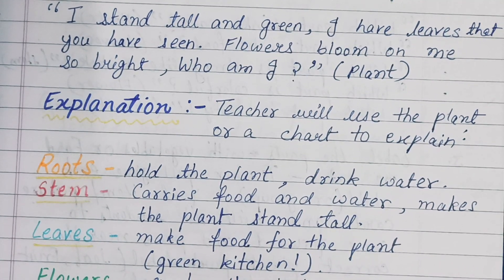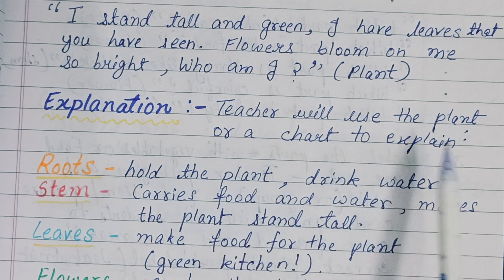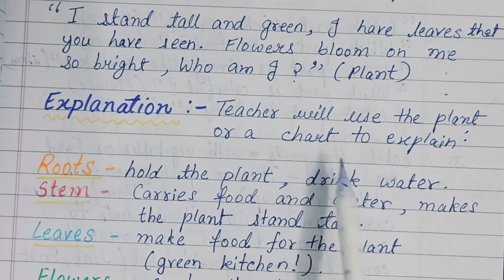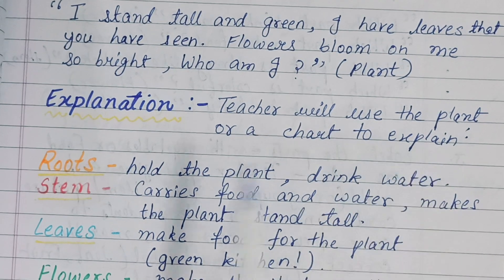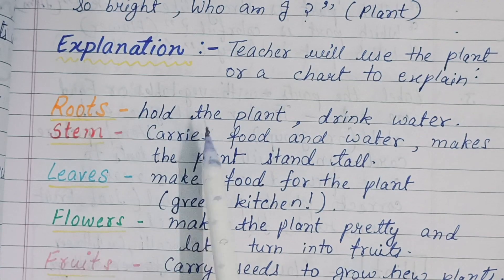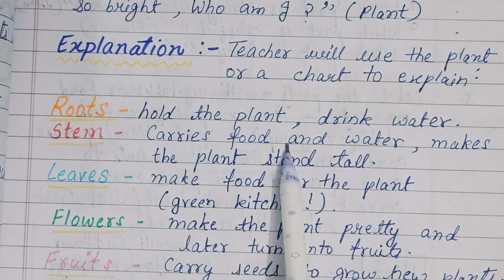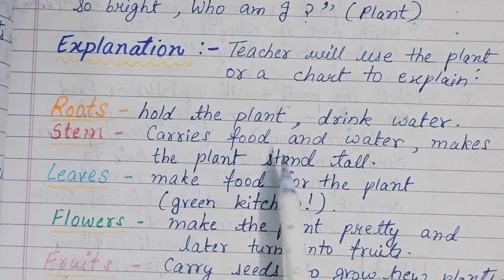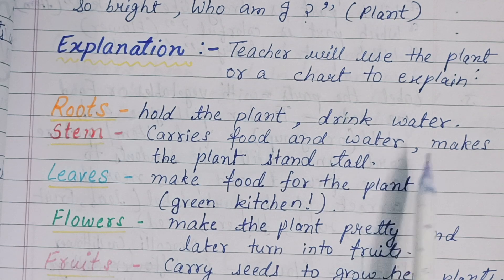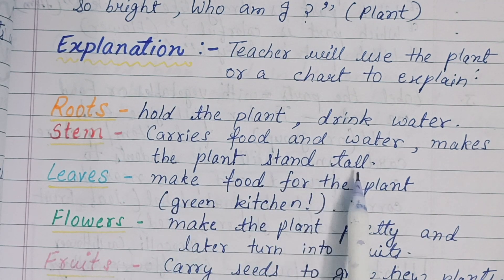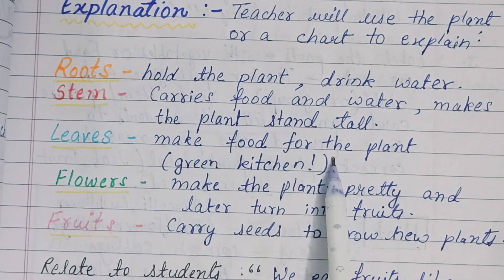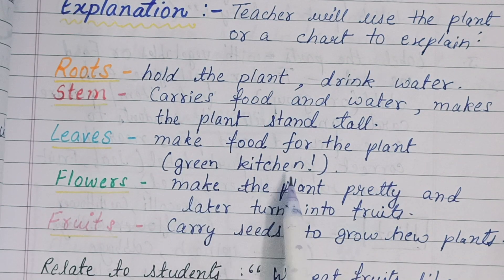Start with the explanation using the plant or a chart. Roots hold the plant and drink water. The stem carries food and water and makes the plant stand tall. Leaves make food for the plant — they are like a green kitchen.